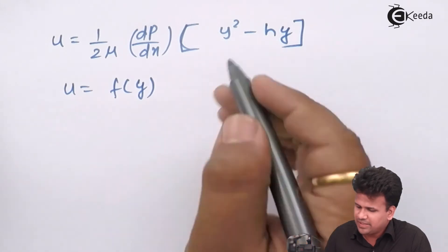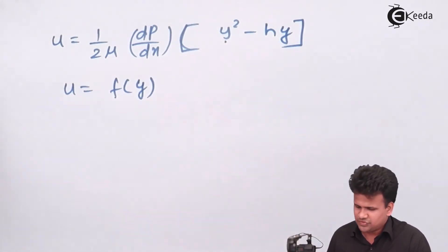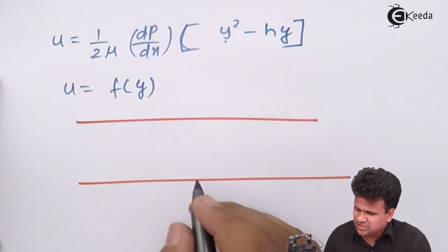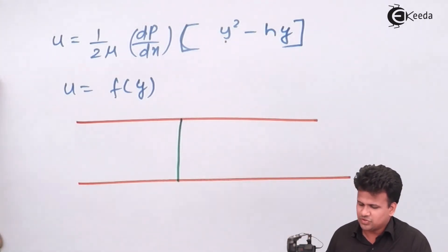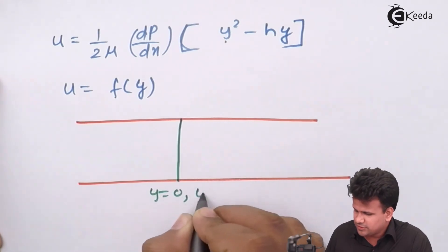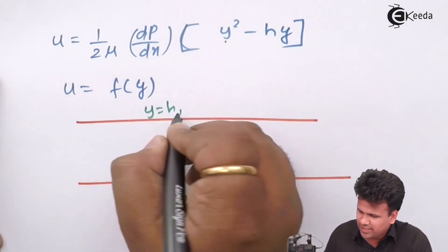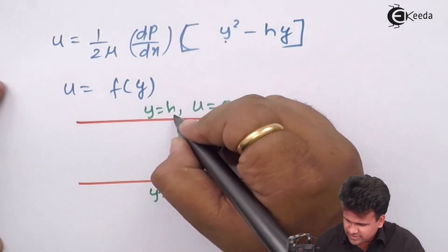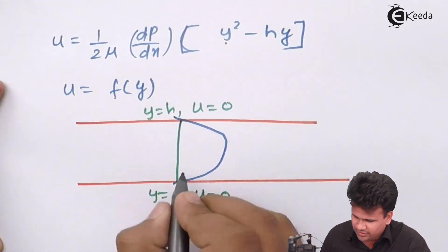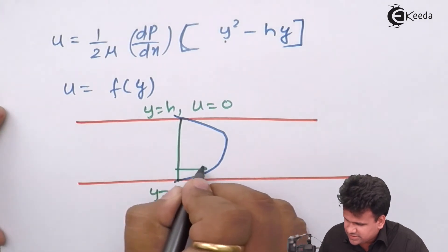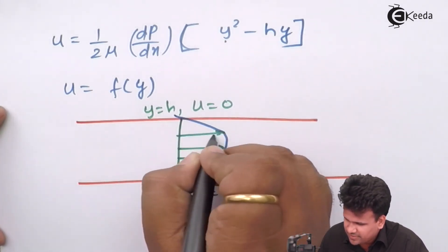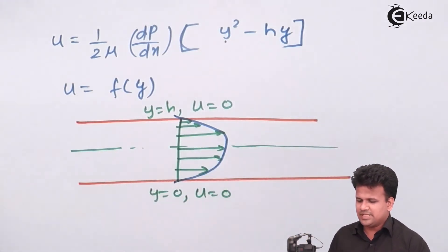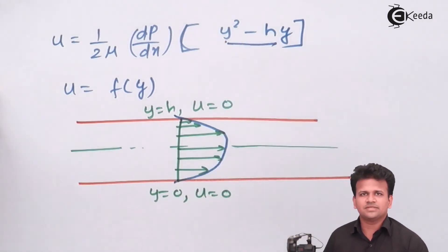The curve traced is a second degree curve. This is the top surface of the fluid and this is the bottom surface. Both surfaces are at rest since they are in contact with the solid surface — at y equal to 0, u equals 0, and at y equal to h, u equals 0. The path traced by this curve will be parabolic: the velocity increases toward the center, where it is maximum, and gradually decreases toward the walls.